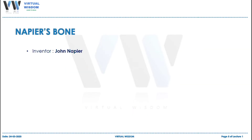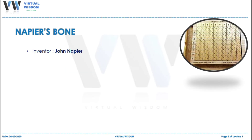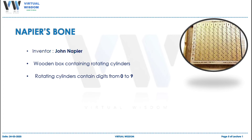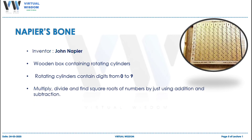After Abacus, a new calculating device was invented called Napier's Bone. This device was named after its inventor John Napier. A Napier's Bone consists of a wooden box which contains rotating cylinders. All of the rotating cylinders have digits from 0 to 9. It can only multiply, divide, and find square roots by using simple addition and subtraction of numbers. The highest achievement of this mathematician was logarithm.